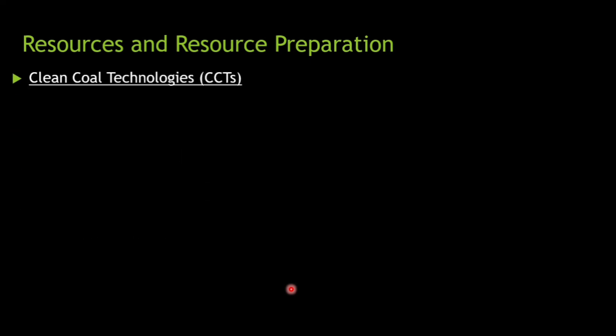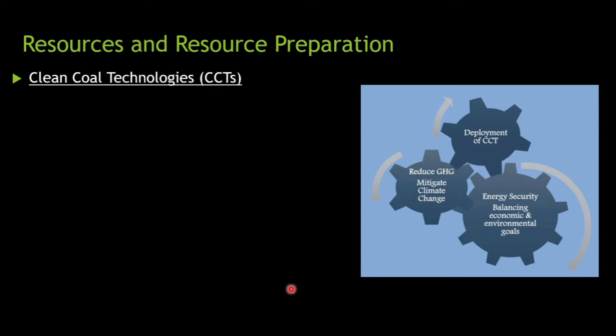For resources and resource preparation, we can implement clean coal technologies (CCT). Coal provides immense calorific value but releases carbon dioxide responsible for ozone depletion. By removing certain gaseous elements from coal, we get a cleaner form. Deploying CCT reduces greenhouse gases (GHG), mitigates climate change, and achieves energy security by balancing economic and environmental goals — though it is expensive.